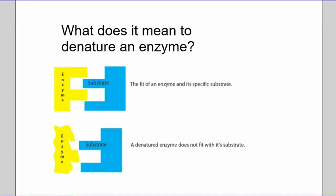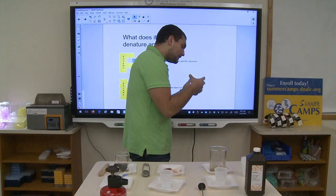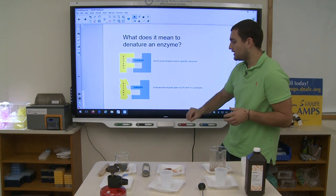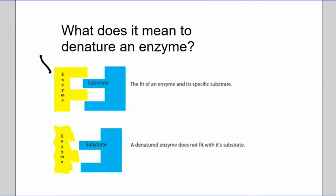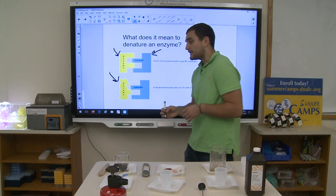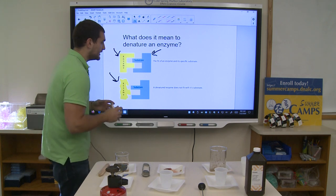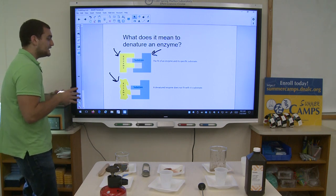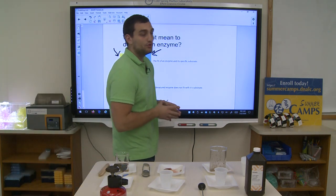The enzyme fits directly with its substrate — they match shapes, kind of like a lock and a key. The enzyme and the substrate are shaped to go together. When you denature an enzyme, you're changing the shape of the enzyme. If I change the temperature or change the pH, I can change the shape of the enzyme. That enzyme will no longer fit the substrate, which means the enzyme will no longer work. Changes in temperature and pH denature the enzyme, causing it to no longer fit the substrate.